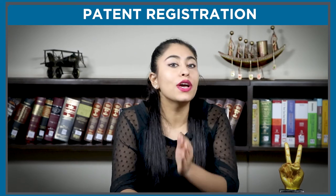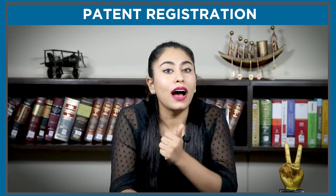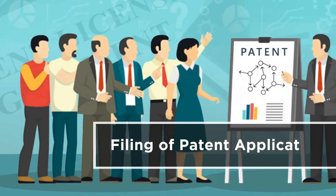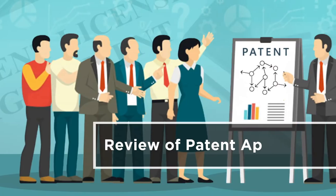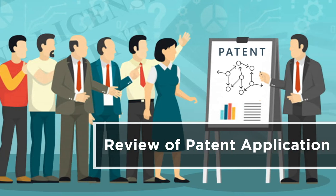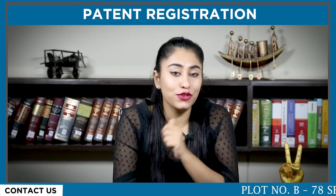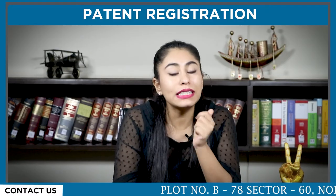An applicant should get the application drafted in Form 1. Moreover, he or she must attach the specifications with each application in Form 2. After that, the applicant needs to file the application for patent registration with the Indian Patent Office.